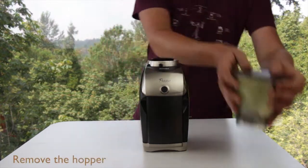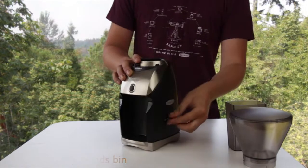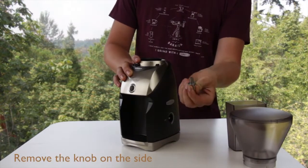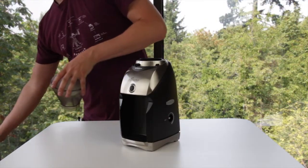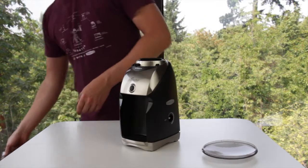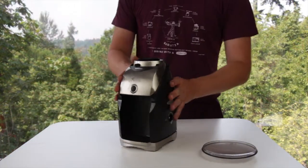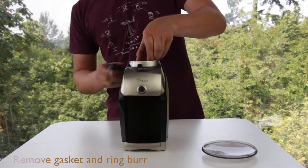Remove the hopper, grounds bin, and the knob on the side. The knob you just pull and wiggle and it slides right off. I like to use the hopper lid as a tray to hold on to the nuts and bolts so I don't lose them while I'm doing the process. Go ahead and pull out the gasket and remove the ring burr.